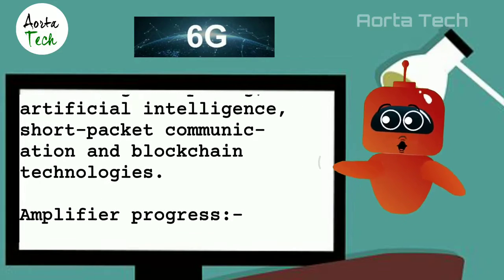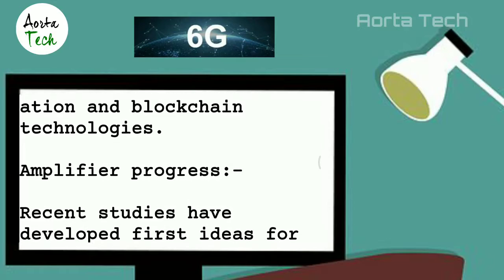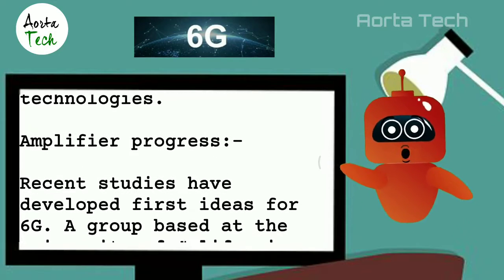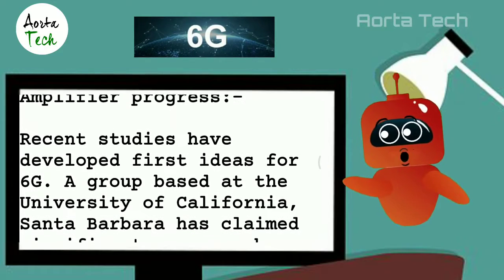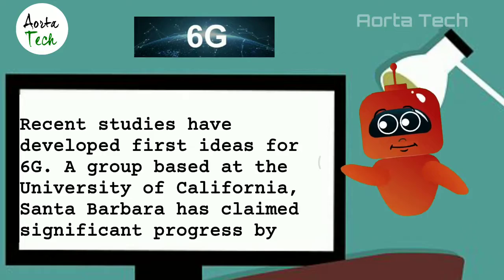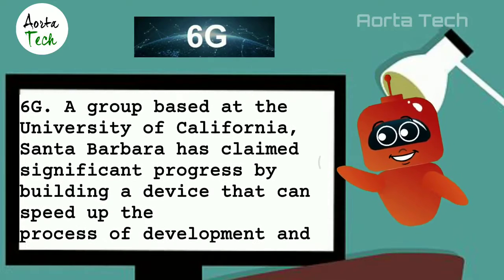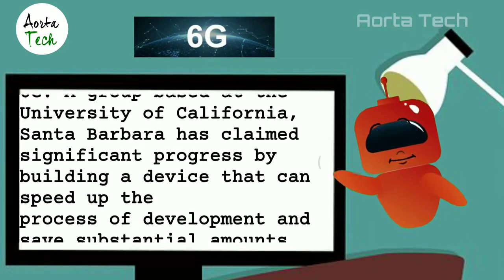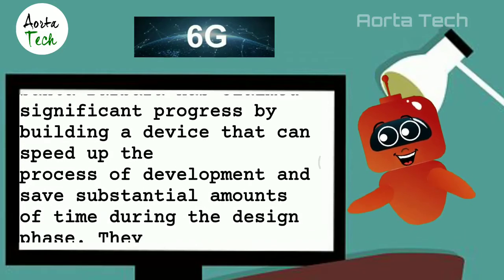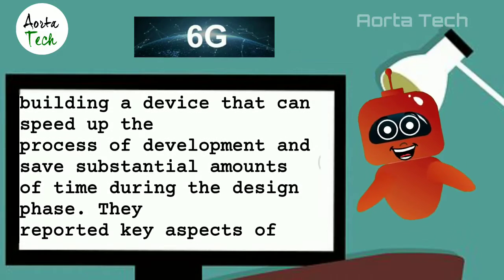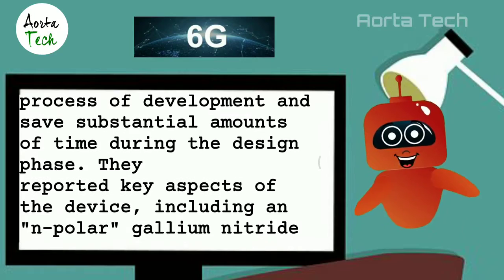Recent studies have developed first ideas for 6G. A group based at the University of California, Santa Barbara has claimed significant progress by building a device that can speed up the development process and save substantial amounts of time during the design phase. They reported key aspects of the device, including an N-polar gallium nitride high electron mobility transistor (HEMT), in two papers published in IEEE Electron Device Letters.